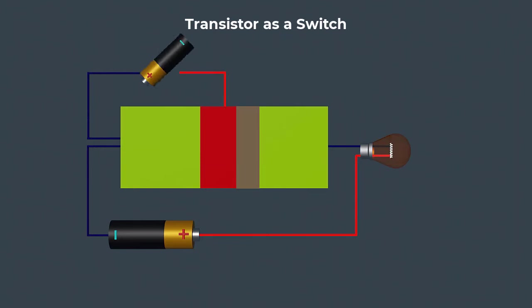If the base-emitter junction is reverse biased, the depletion layer is widened and no current flows from the emitter to the collector. In this way a transistor acts as an off switch.